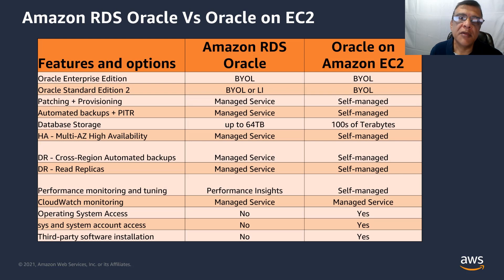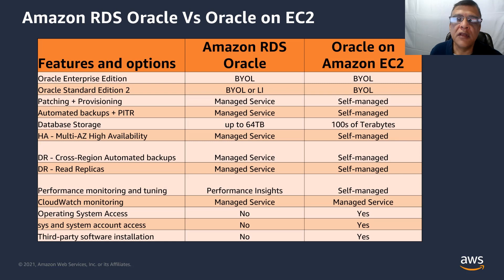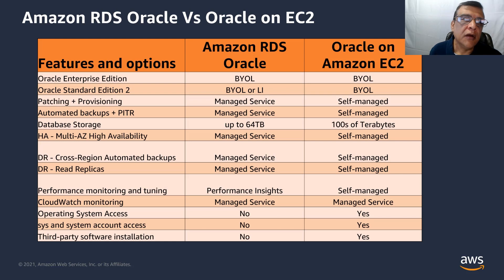Database storage is limited to 64 terabytes for RDS Oracle and can be hundreds of terabytes for the EC2 option. As for other options, most are managed under the managed service such as automated backups, point-in-time recovery, high availability multi-AZ, DR options for cross-region, automated backups, and read replicas. All of these can be implemented on Oracle on EC2 as well, but that requires significant effort and maintenance by the customer. For monitoring and performance monitoring, Amazon RDS for Oracle makes it easier through Performance Insights and the managed service.